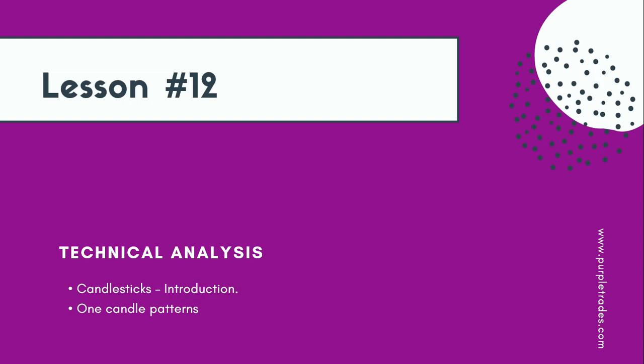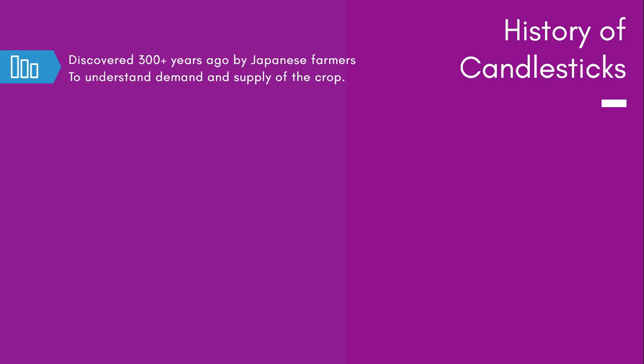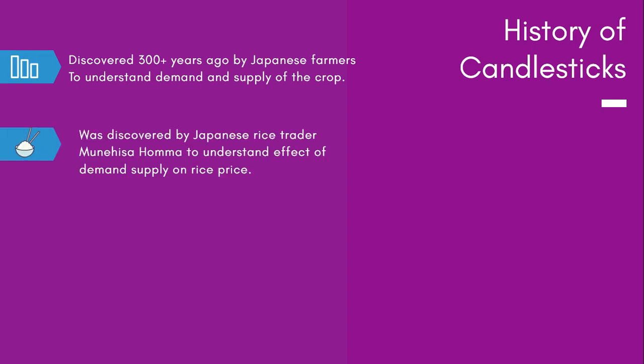Candlesticks is arguably the oldest technical indicator, formed around 300 years ago. Candlesticks were formed in the 18th century and were discovered by a Japanese rice trader. Sources say candlesticks were discovered by a Japanese rice trader named Munai Sahoma to understand the demand and supply of the crop they used to produce.